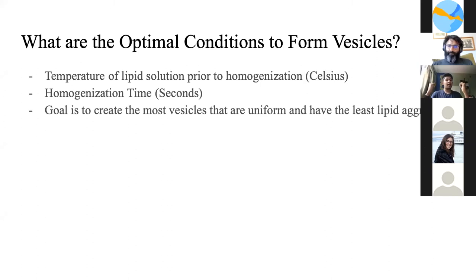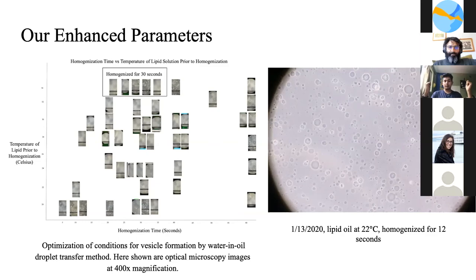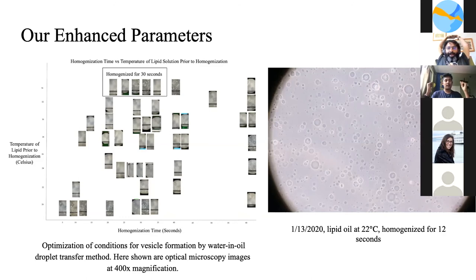We also varied homogenization time to find how long to homogenize for perfectly uniform vesicles — the downside being more lipid aggregates. We were looking for a sweet spot between temperature and homogenization time. By mapping this temperature and energy parameter space, we found that higher temperatures and higher homogenization times resulted in no vesicles forming. Low temperature with high homogenization produced too many lipid aggregates. We found that 22 degrees Celsius and 10 to 12 seconds of homogenization produced the best vesicles — very few lipid aggregates and well-sized unilamellar vesicles.